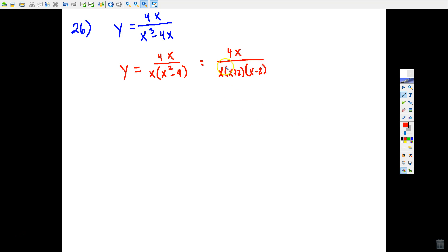And now you want to cancel whatever you can, and the only thing I see that can cancel are these x's. So I know I'm going to have a hole at x equals 0. If you just take that term that canceled and set it equal to 0 and solve, you would have x equals 0. So I'm going to have a hole there.